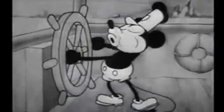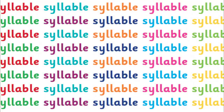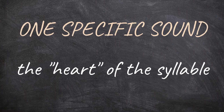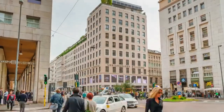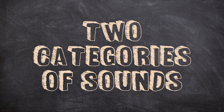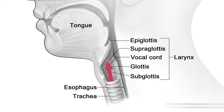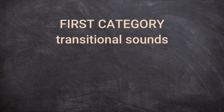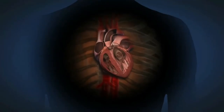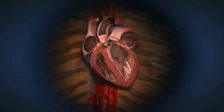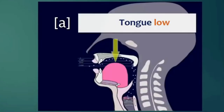Every time we expel a small quantity of air corresponding to a syllable, most of the energy is used for the production of one specific sound — the heart of the syllable — while the other sounds represent transitional sounds. They are articulated using less energy than the main ones, giving us two categories of sounds: transitional sounds that are usually very short with increased air friction, and main sounds that form the heart of the syllable.